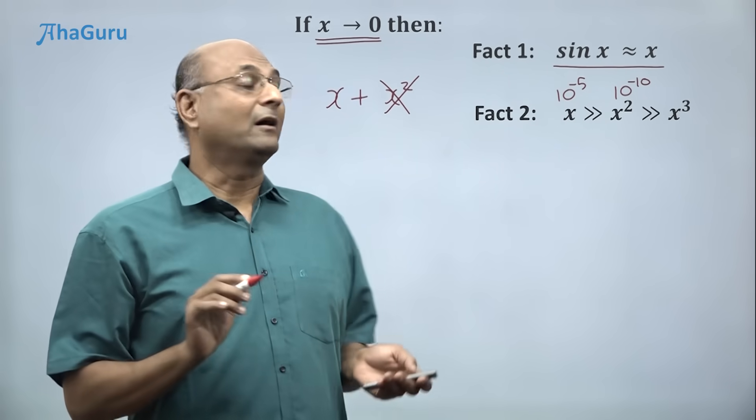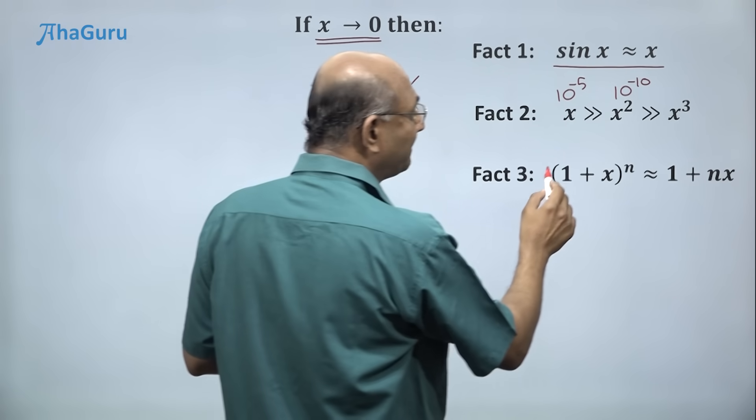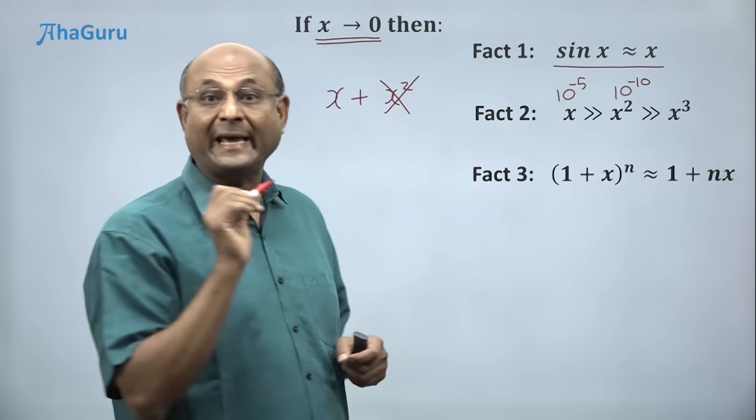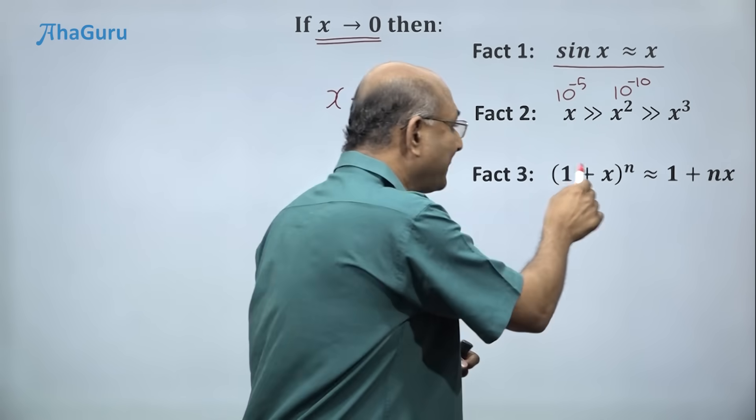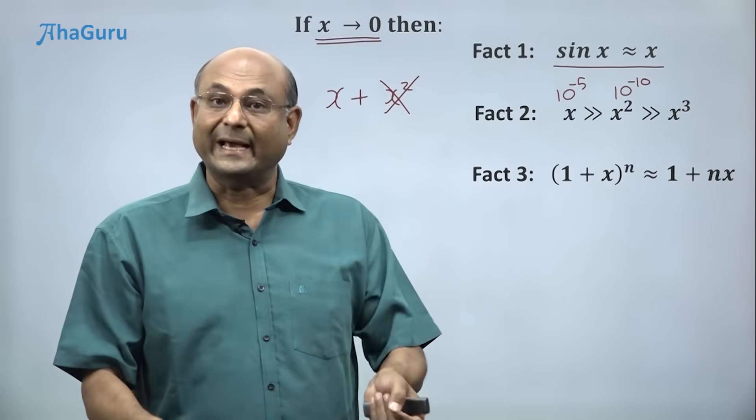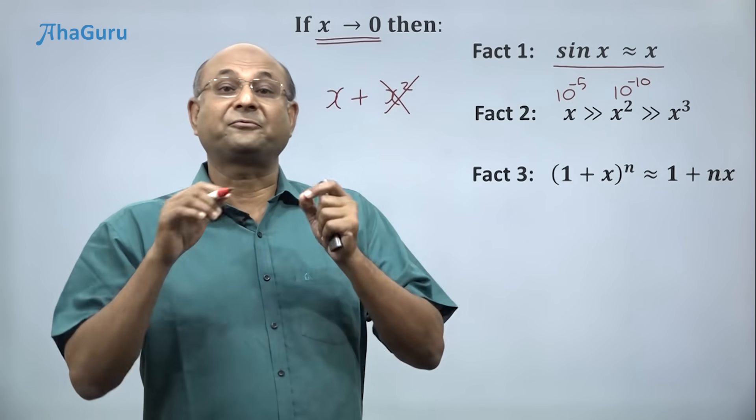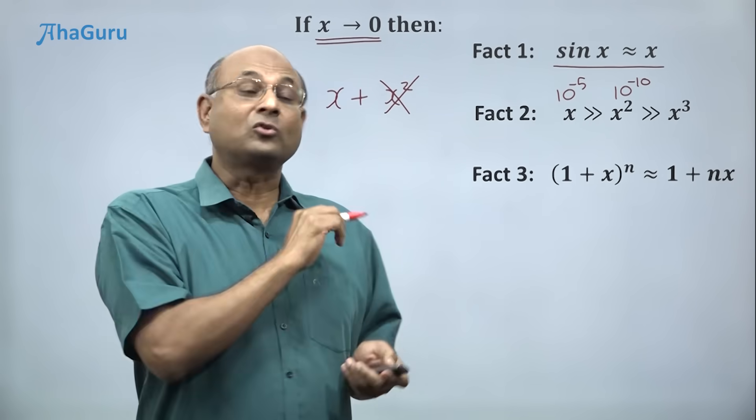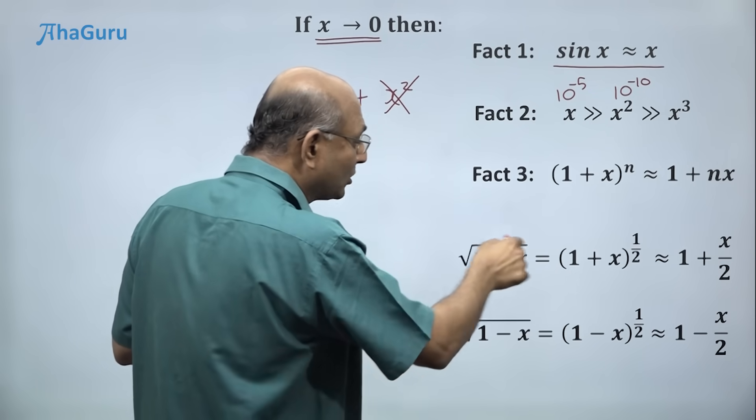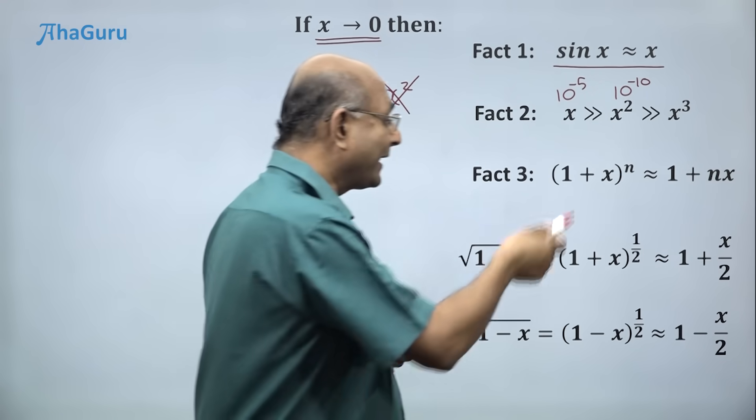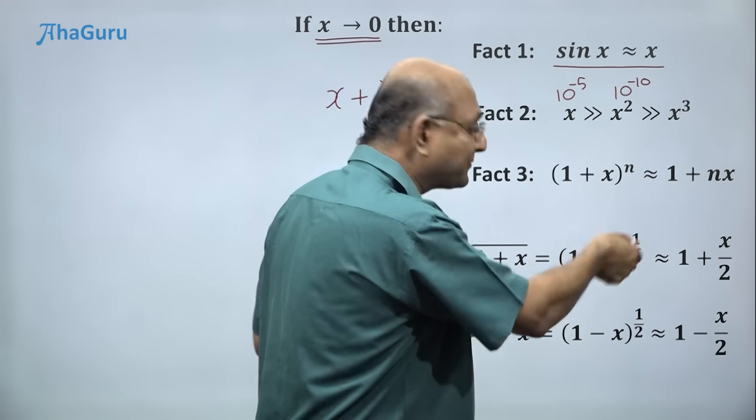What is fact number 3? A very powerful fact. 1 plus x to the power of n is 1 plus n times x. So 1 plus x whole cube is 1 plus 3x. 1 plus x whole power 5 is 1 plus 5x. And root of 1 plus x, root of 1 plus x is 1 plus x power half, right? So you can write it as 1 plus half times x.